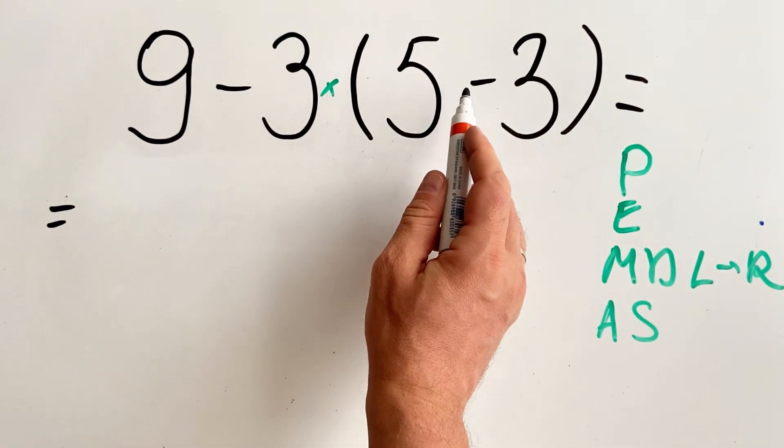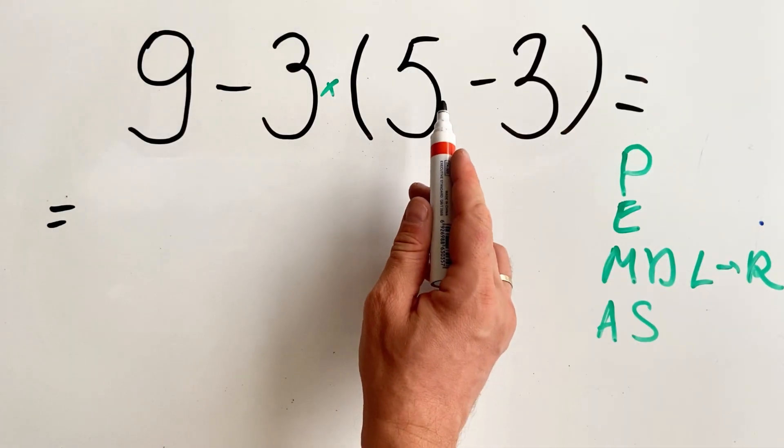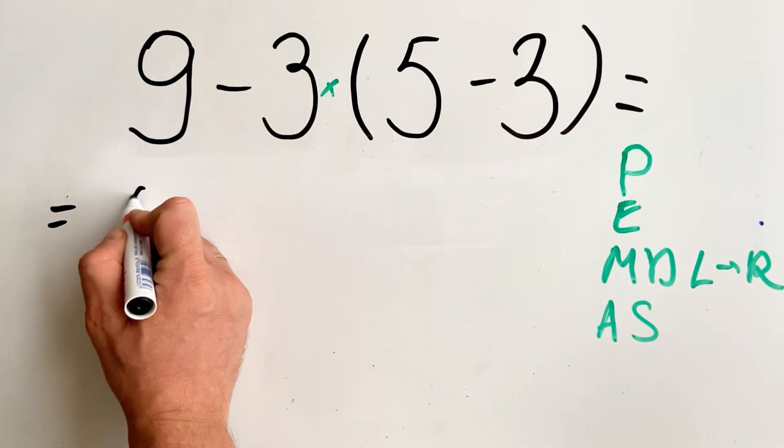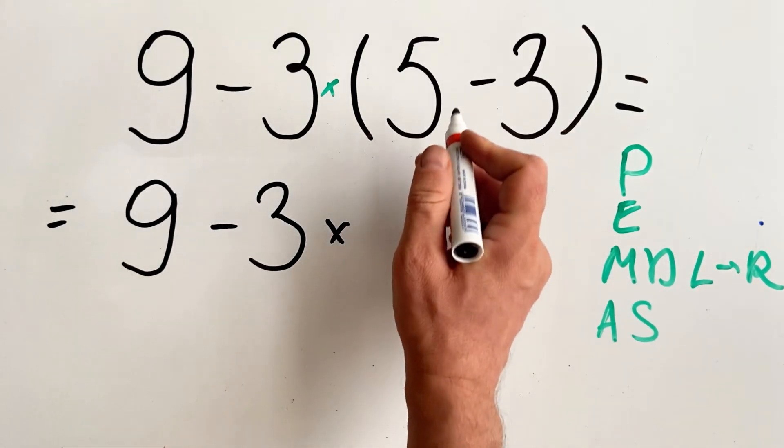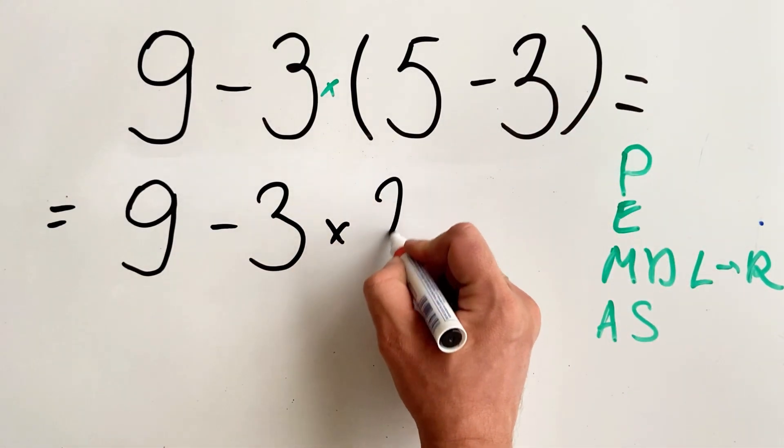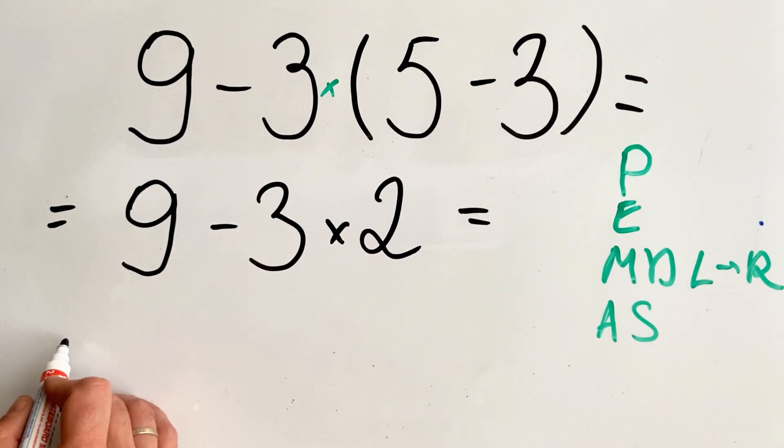As mentioned, we first need to do what's inside the parenthesis, so first we need to do 5 minus 3. And we get 9 minus 3 multiplied by... 5 minus 3 equals 2, so multiply by 2.